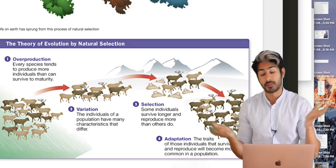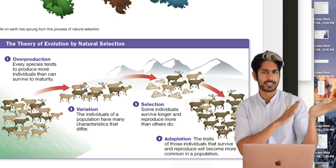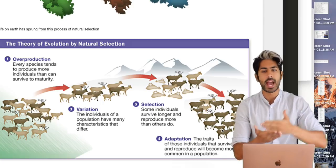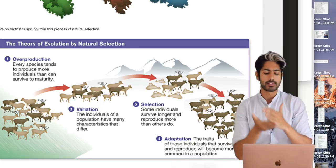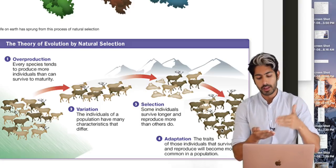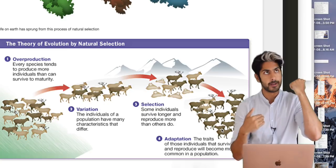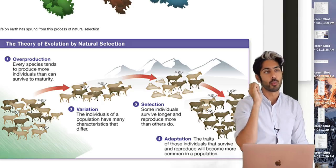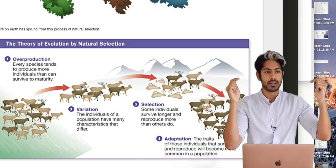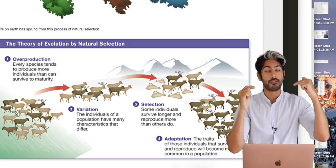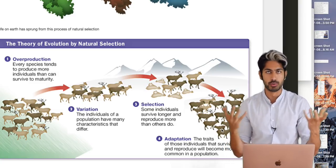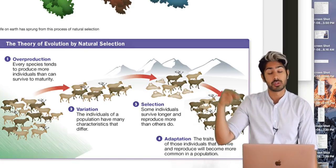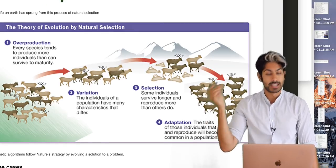Everybody tries to reproduce — that's the point of life at the basic level. But the ones whose children are the most fit are the ones most likely to survive. The way nature does this is it finds those that are most fit by some measure of fitness — in the real world it would be brute physical strength — and those genes are then more likely to be passed on to the next generations. So that's adaptation.